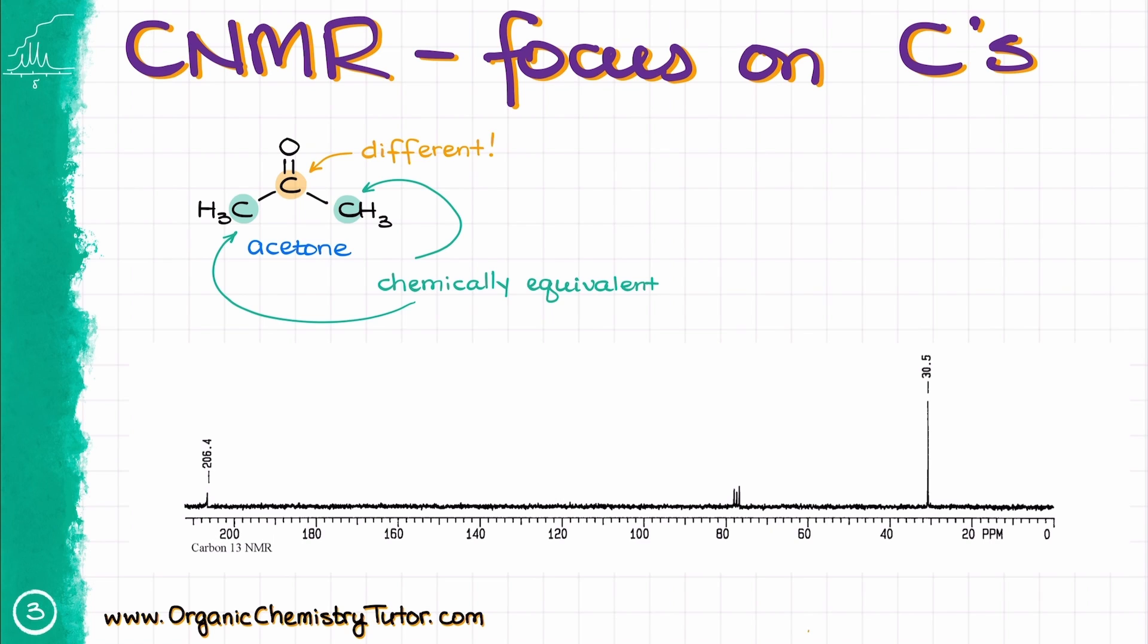Looking at the C NMR spectrum for the acetone molecule, we can see two signals on it. One here at 206 ppm, and another one at 30 ppm.